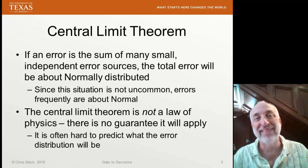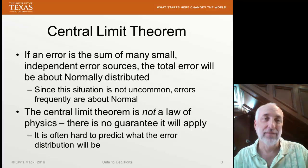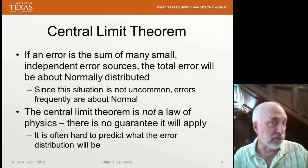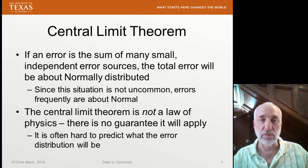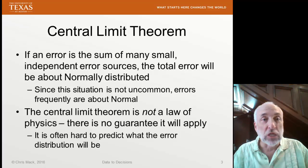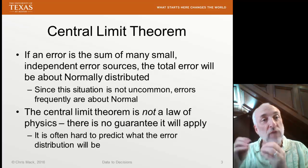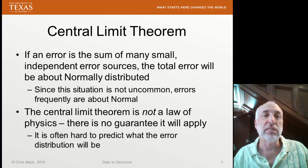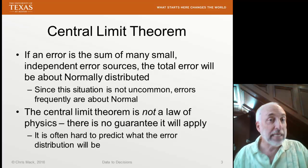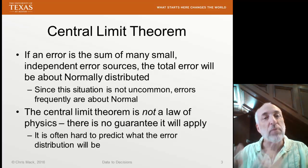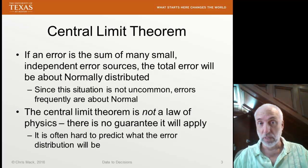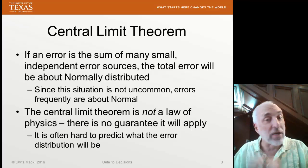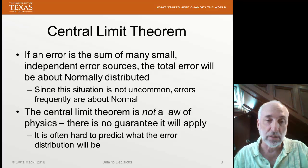One way we tend to think that normality is probably a good assumption is when the central limit theorem applies. The central limit theorem says: if I have a random variable equal to the summation of lots of other small random variables, then that summation will have a probability distribution approximately equal to a normal distribution, even if each individual independent error source is not normally distributed. So if my total error is the sum of contributions of lots of small errors, we expect the total error to be approximately normally distributed.